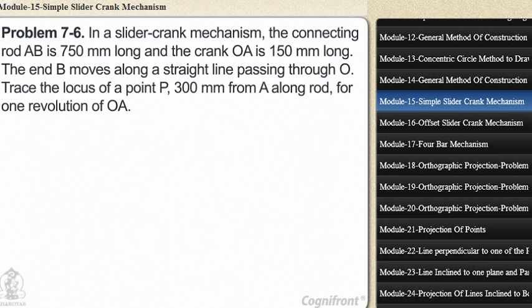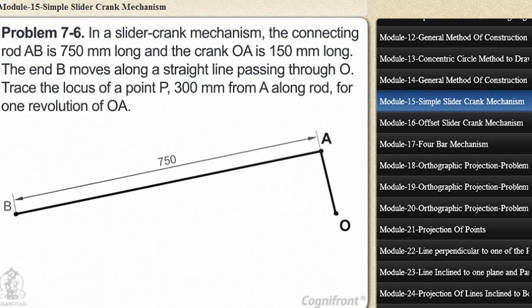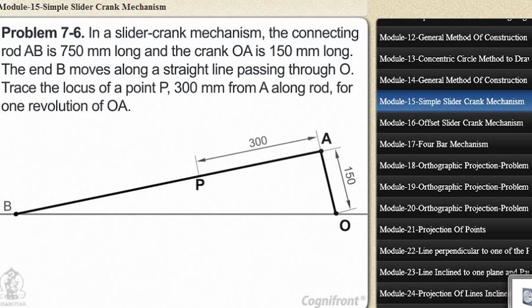Problem 7-6: In a slider crank mechanism, the connecting rod AB is 750 mm long and the crank OA is 150 mm long. The end B moves along a straight line passing through O. Trace the locus of a point P, 300 mm from A along the rod, for one revolution of OA.